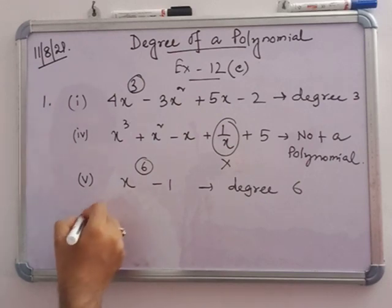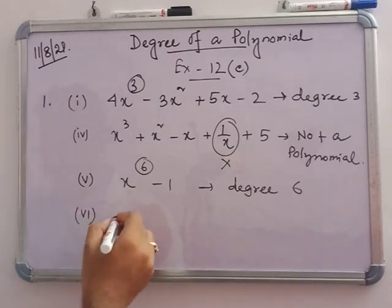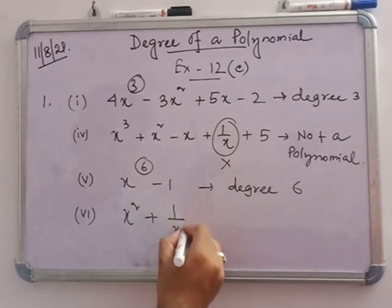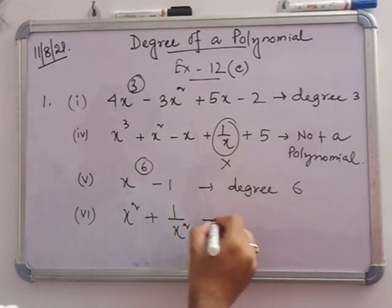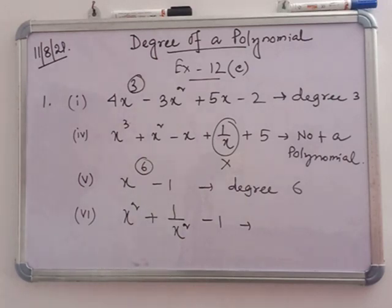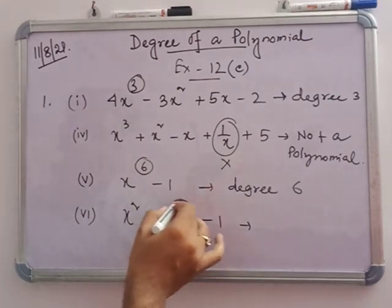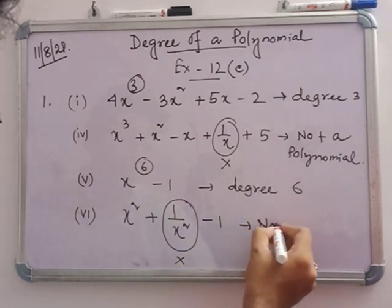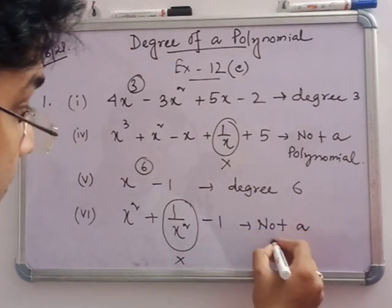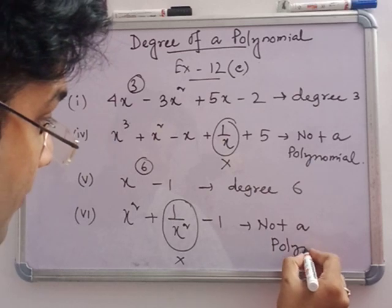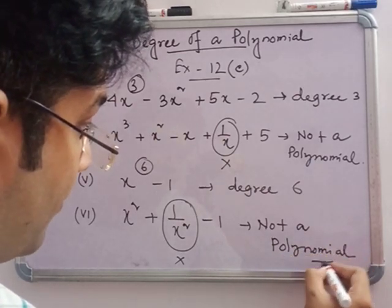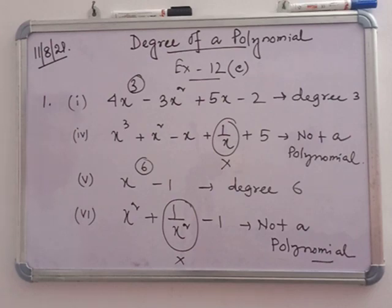In number 6: x squared plus 1/x squared minus 1. This is not a polynomial because the term 1/x squared is present.